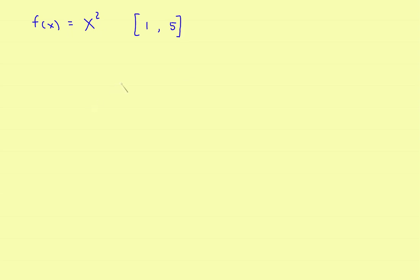Let's take a look at part two of how to evaluate a definite integral using a Riemann sum. We're going to use exactly the same function we used last time, f of x is equal to x squared. The only difference is last time we evaluated it on the interval from 0 to 2; this time we're going to do it on the interval from 1 to 5. The process will be essentially the same, but there's a little bit more algebra involved.